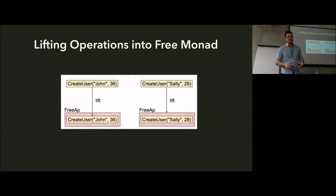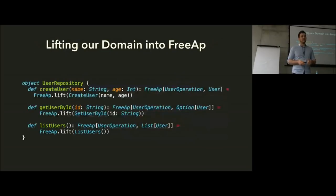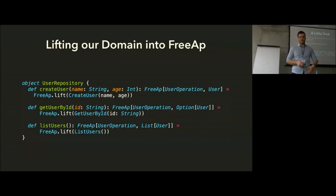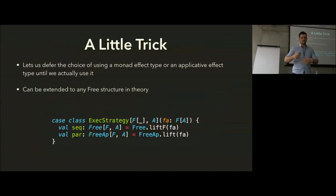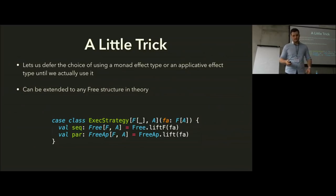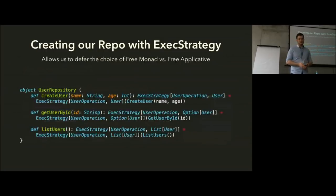We can also lift our operations into the free applicative in a similar way — it's just FreeApp.lift, or free applicative in Cats. Since they look almost exactly the same, we can use a little trick I like called exec strategy, where we defer whether it's a free monad or free applicative until the time we use it. This lets us later choose whether we want to interpret our domain sequentially or in parallel. Our repository now just returns the exec strategy, letting us choose what to lift it into later.